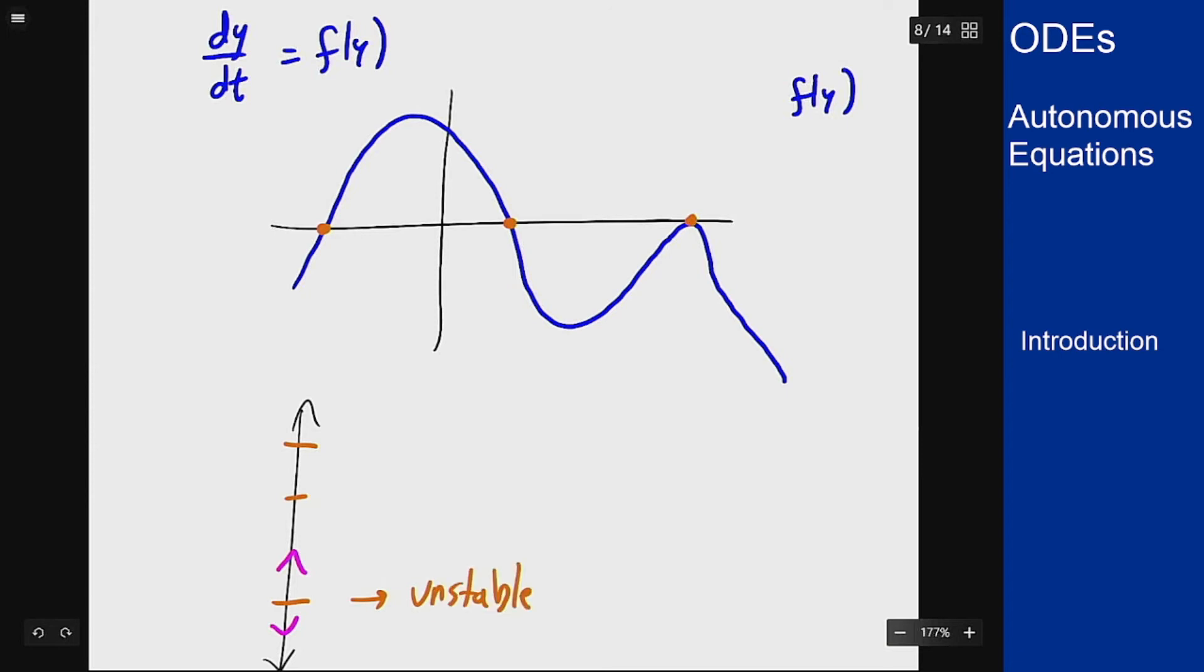We've got the second one, we have positive below so going up into the point, negative above going down into the point. This is going to be asymptotically stable.